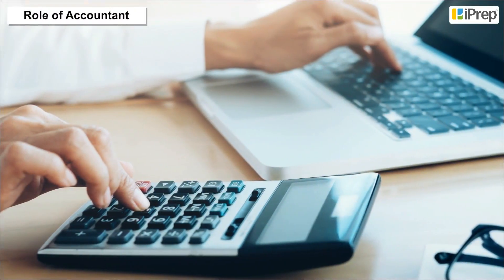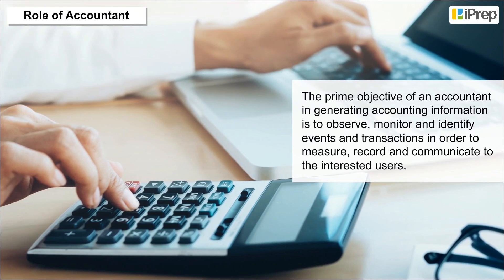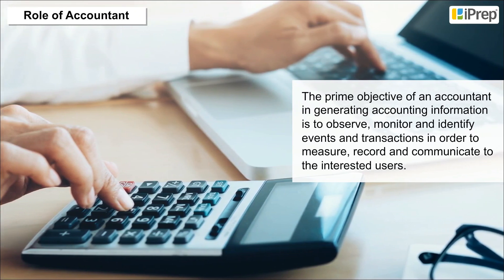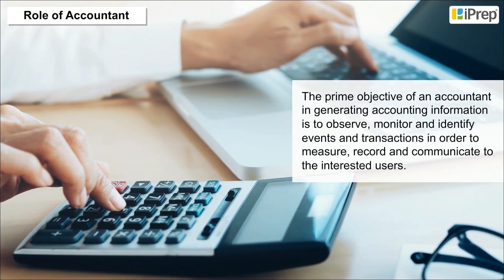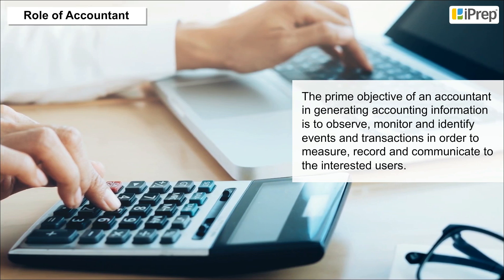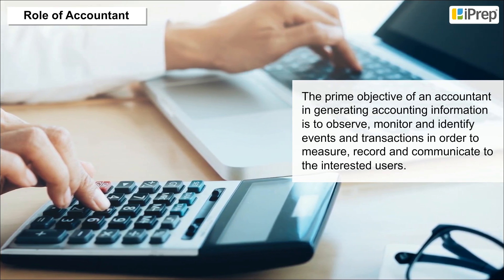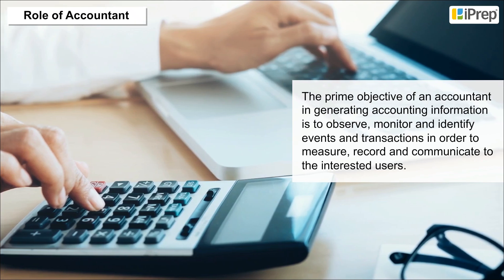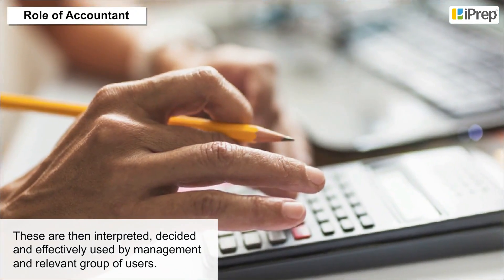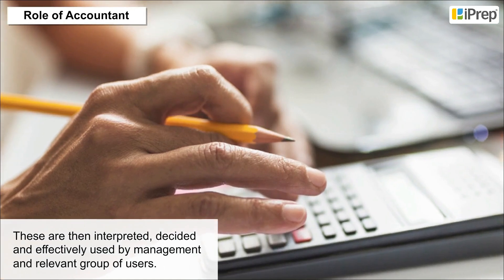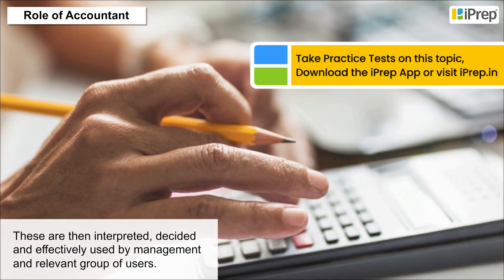Role of Accountant. The prime objective of an accountant in generating accounting information is to observe, monitor and identify events and transactions in order to measure, record and communicate to the interested users. These are then interpreted, decided and effectively used by management and relevant group of users.